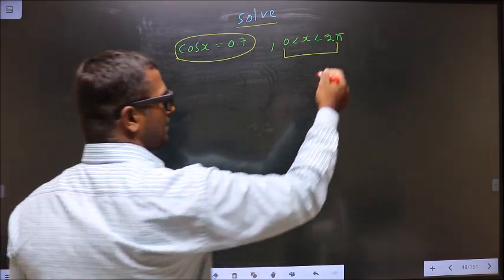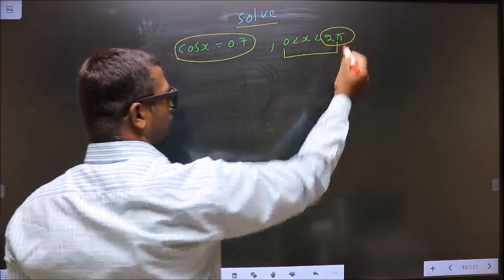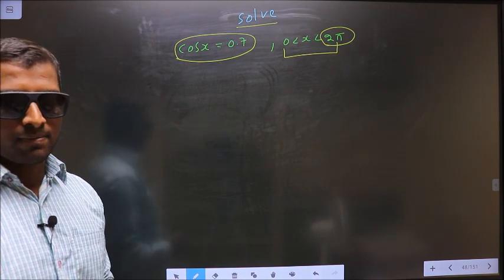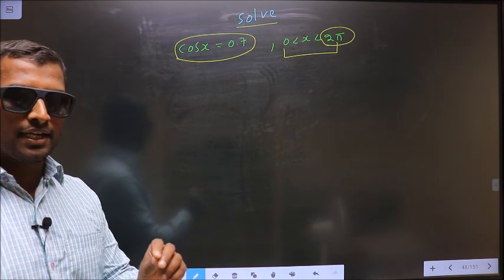Now here's the catch. Here you have 2π, which means you should get the answer in radians. So put your calculator in radians mode.